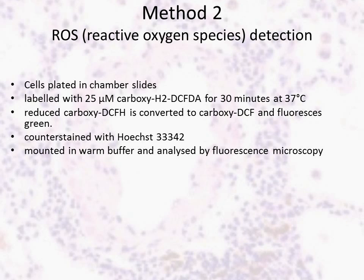Cells were then mounted in warm buffer and analyzed by fluorescent microscopy on a Nikon Eclipse TE300 microscope with SlideBook 5 software. ROS levels were calculated by measuring pixel intensity in triplicate images using Adobe Photoshop CS software.